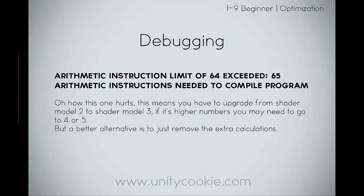'Arithmetic instructions of 64 exceeded - 64 arithmetic instructions needed to compile program.' This one really does hurt. It means you have to upgrade from shader model 2 to shader model 3. If it's a high number, you may have to go as far as 4 or 5. But a better alternative is just to remove that extra calculation. This is just how many calculations are being used, and if you exceed that you'll need to cut down. Sometimes it can be as easy as just moving around a function.